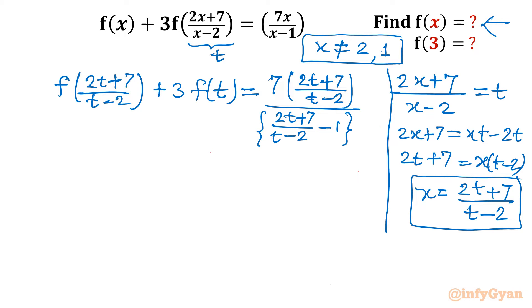So I can write this equation as f((2t+7)/(t-2)) + 3f(t) = 7 times x. So x is (2t+7)/(t-2) over x-1, which is (2t+7)/(t-2) - 1. Now we only have to simplify the RHS first, and then we will take the replacement of the variable. I will consider the simplification.